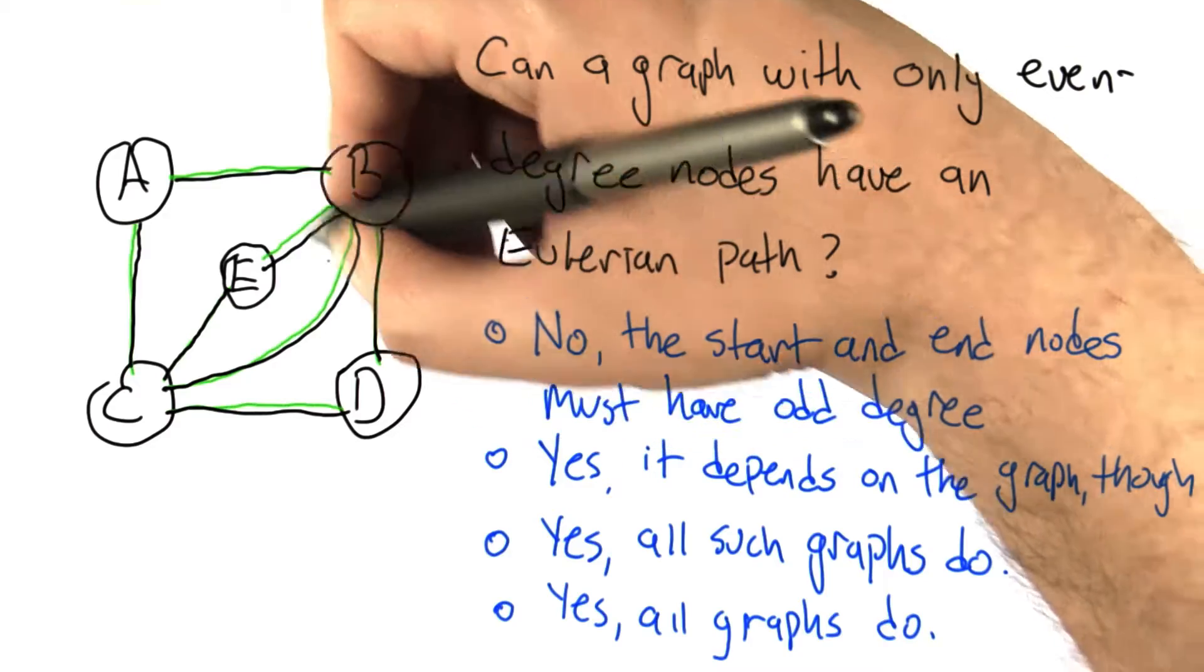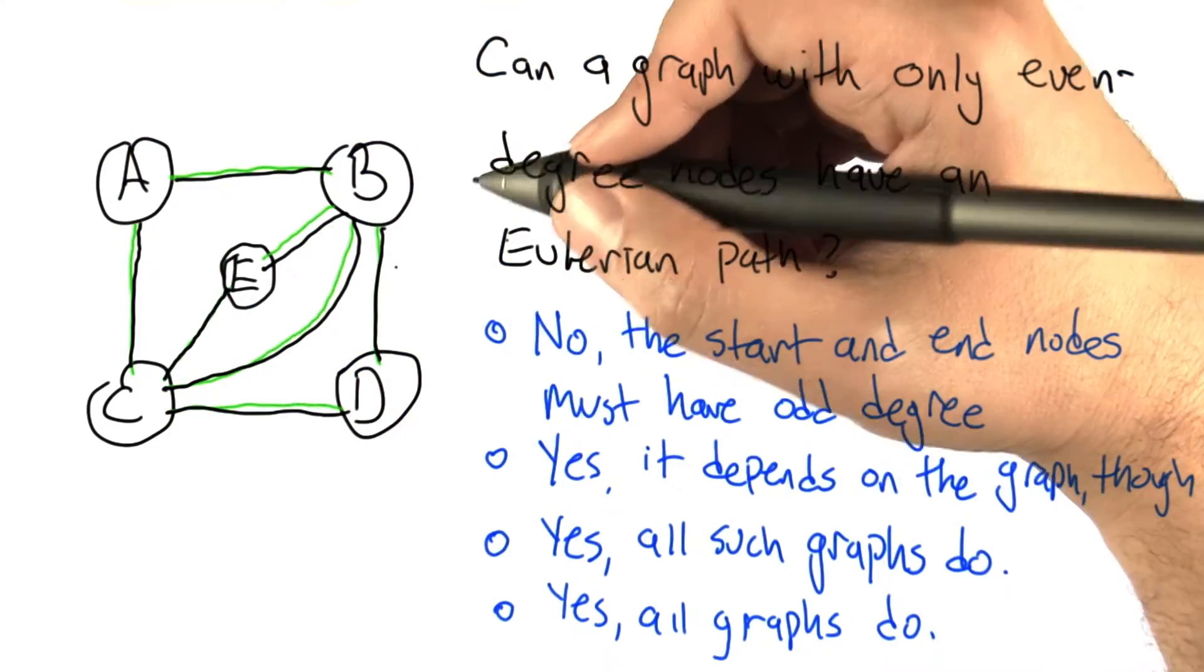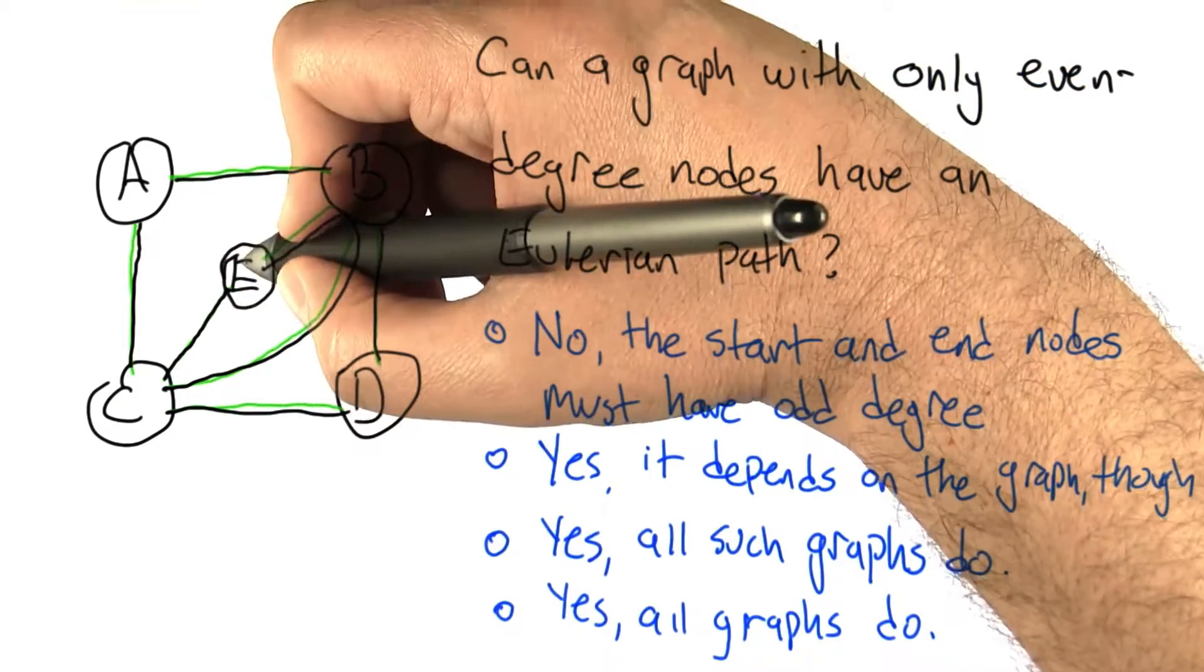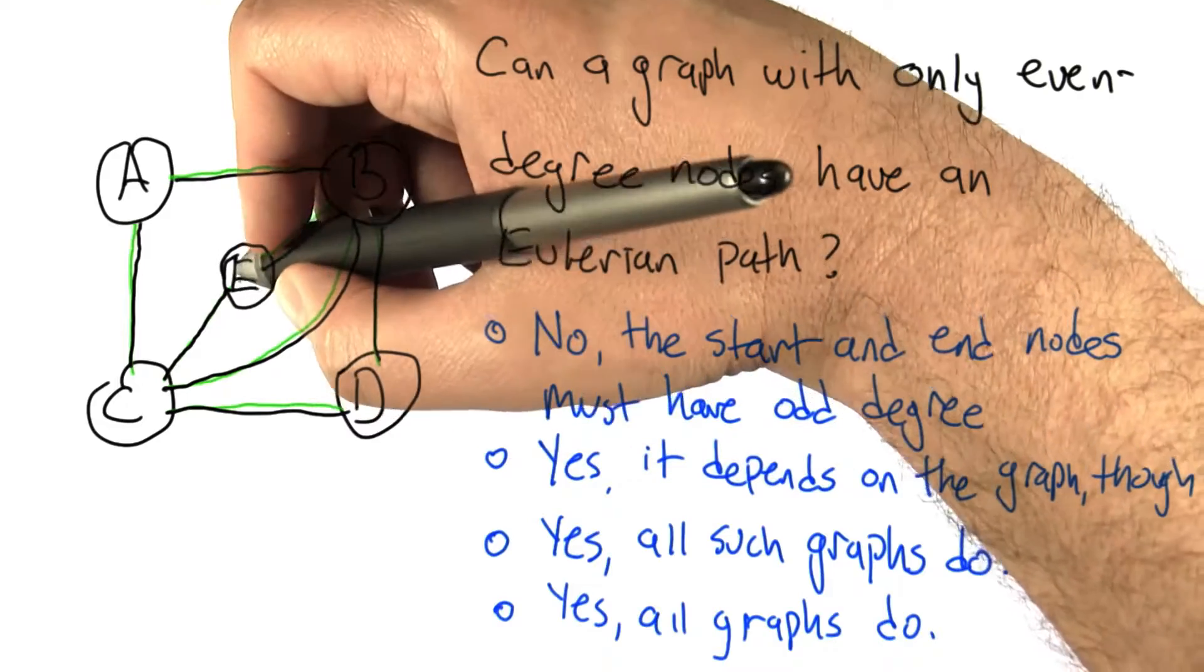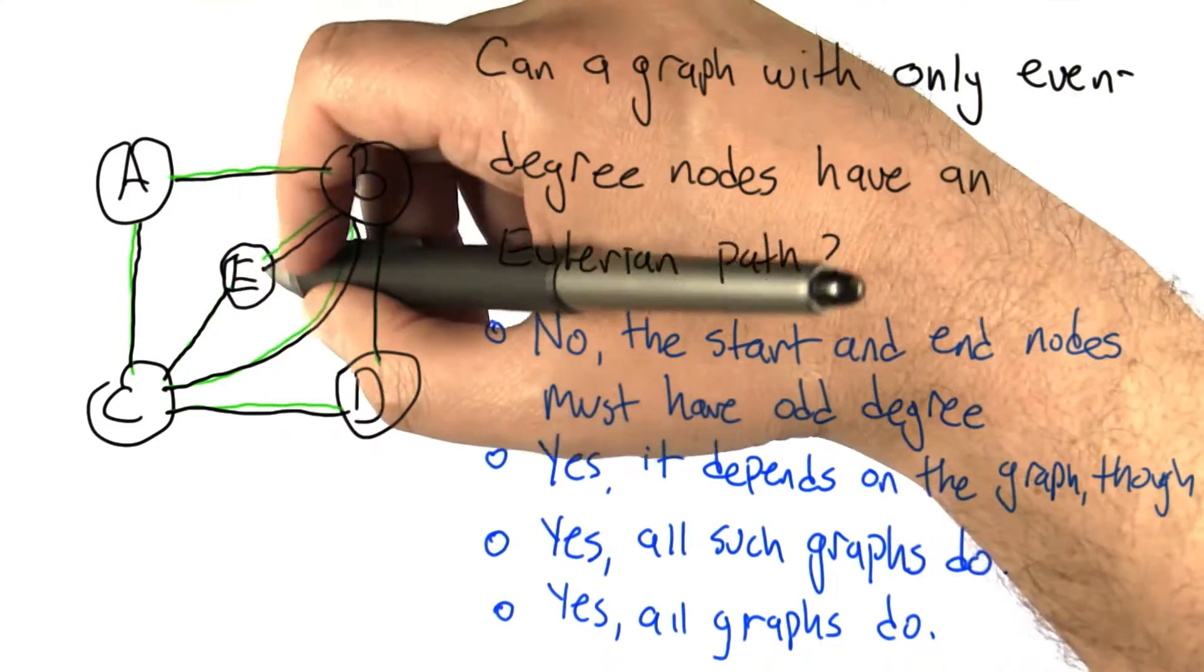So it looks like we were able to hit all of the edges exactly once. So this graph does have an Eulerian path, but there's something very special about the path, and that is it started at E and it ended with E. And so because the path actually started and ended at the same node, that node should have even degree,